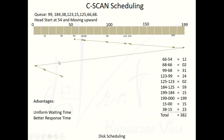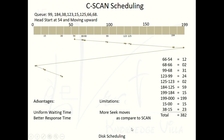The limitation of C-SCAN is more seek moves compared to SCAN. In SCAN scheduling the total seek time was 329, whereas in C-SCAN it is 382. The extra move from 199 to 0 adds 199 seek time as overhead, increasing the total. However, C-SCAN is actually faster than SCAN in real terms because the head moves very quickly in the return direction without performing read/write operations.